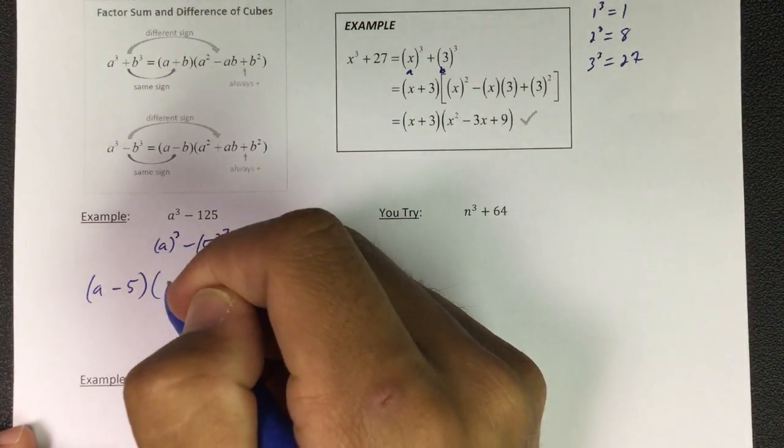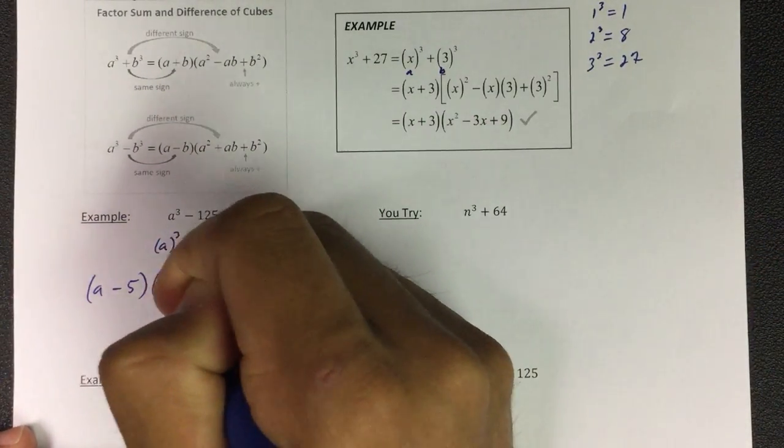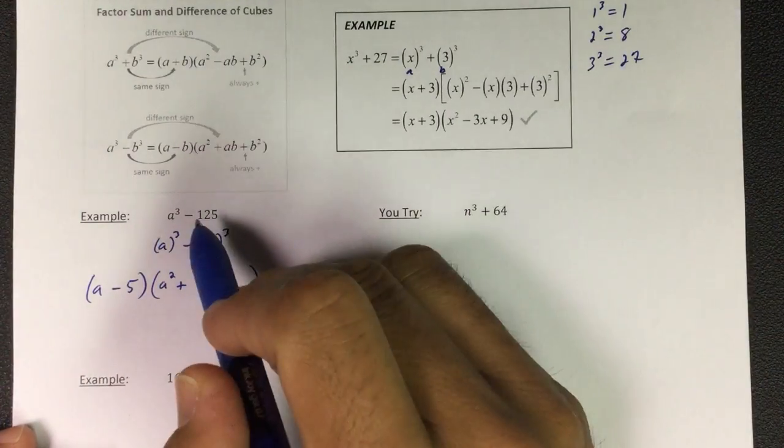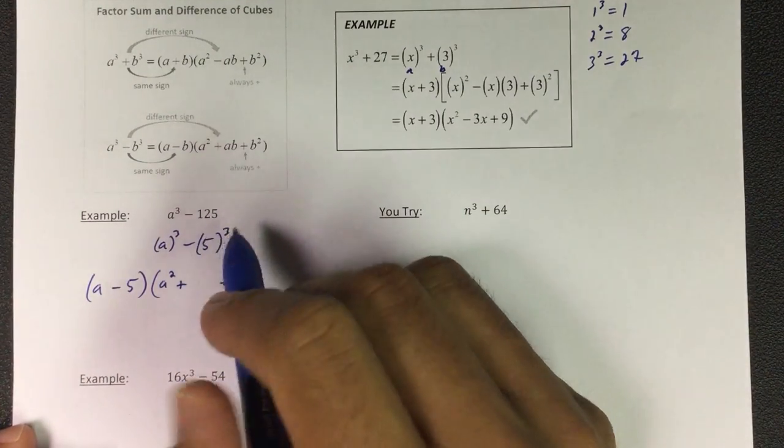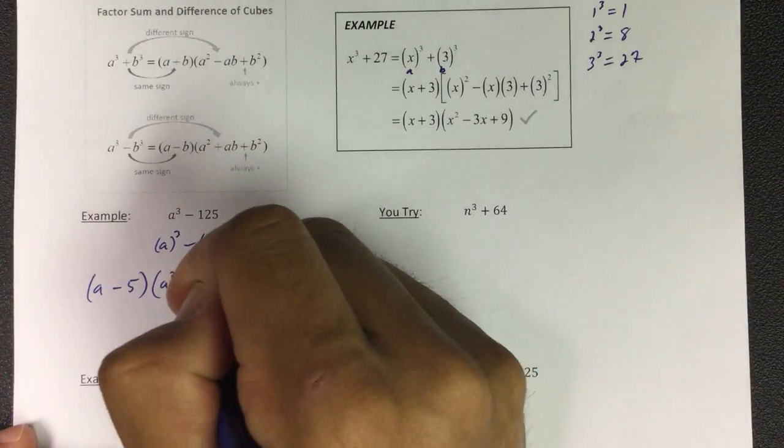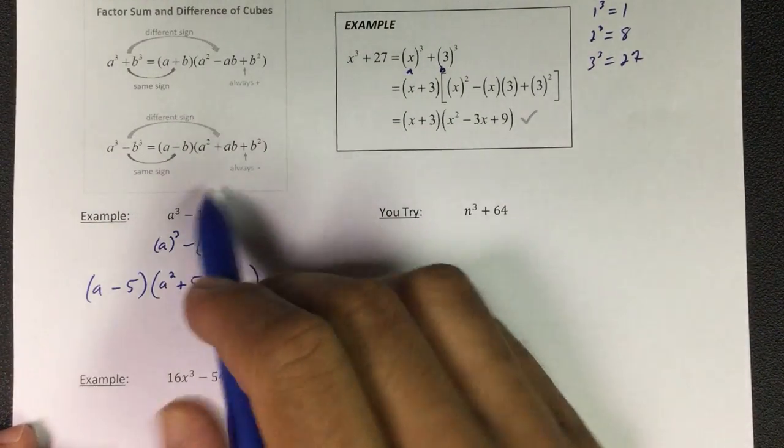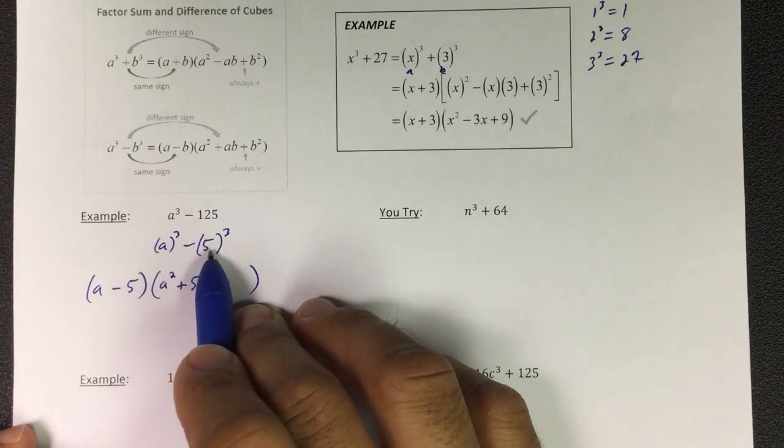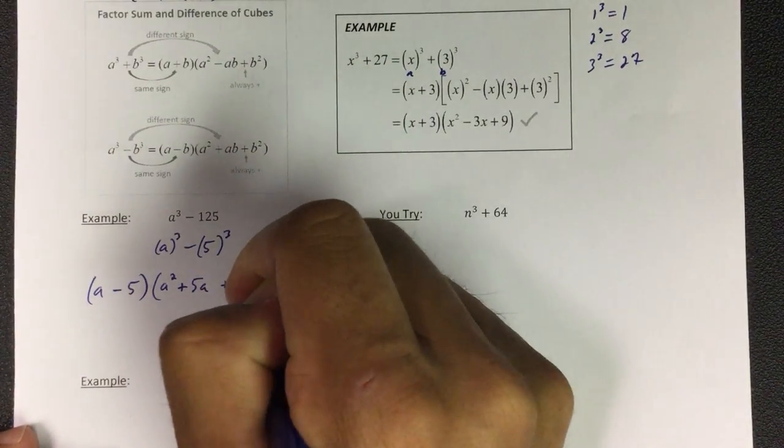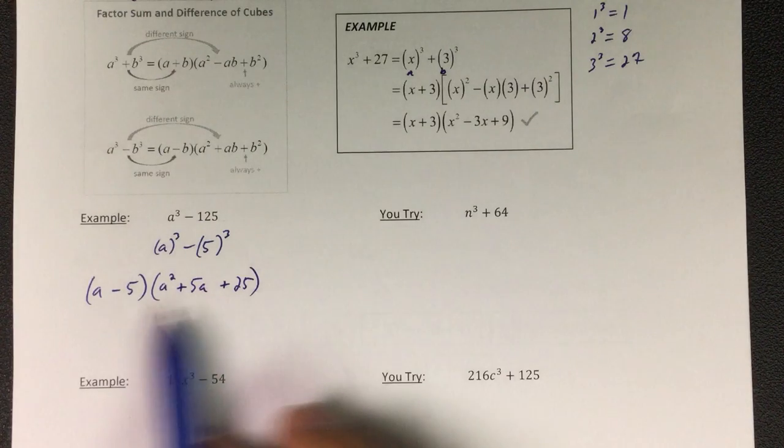Then the first one is a squared, then a times b. So what is 5 times a? It's 5a. And then b squared, 5 squared is 5 times 5, which is 25. You still have to do some work when you're filling it in, but it makes it not too hard.